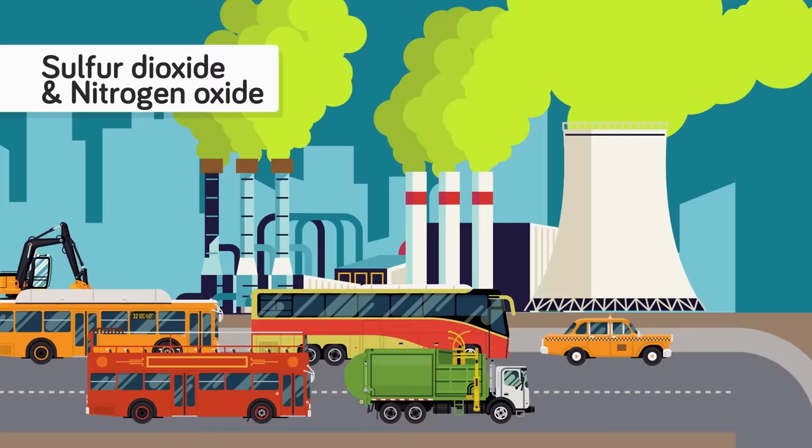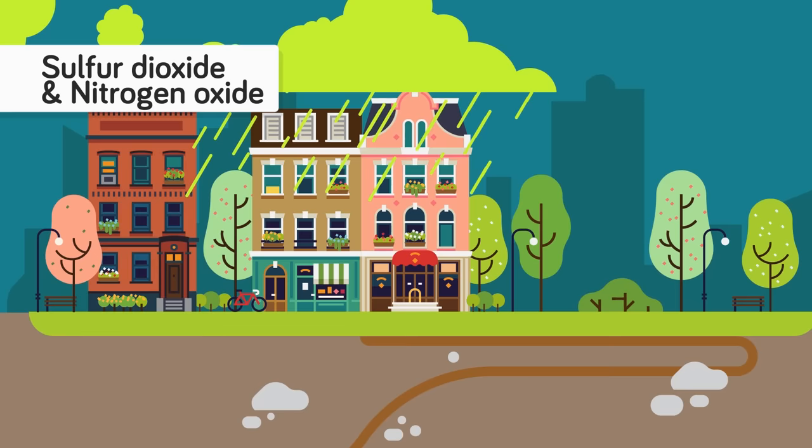Once these gases are in the air, the wind can blow them great distances, making acid rain a problem for everyone, and not just those who live close to these sources.